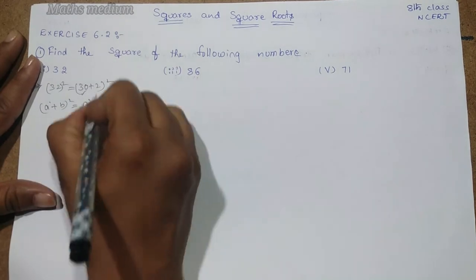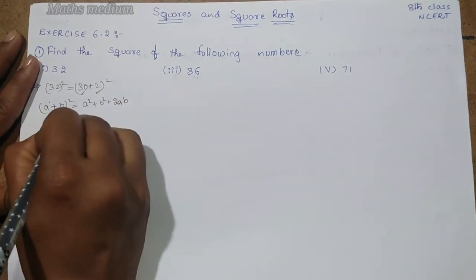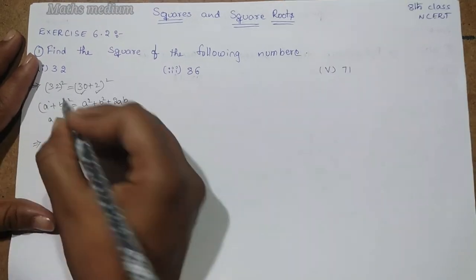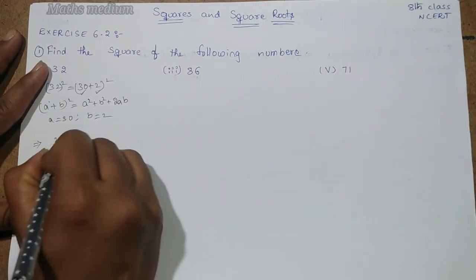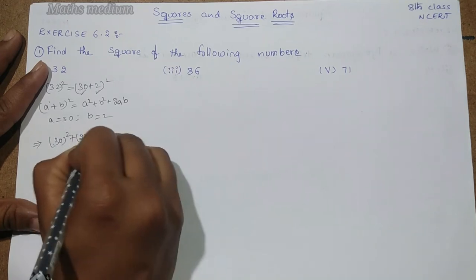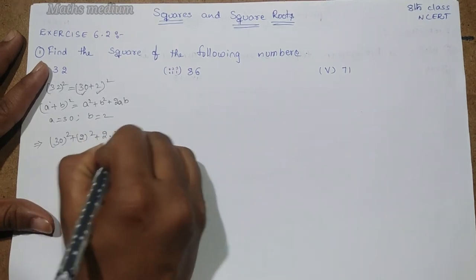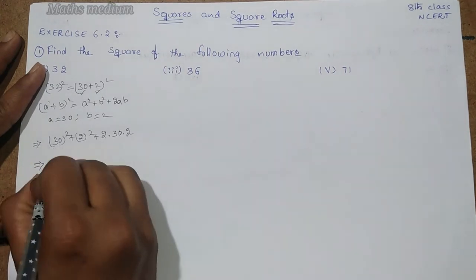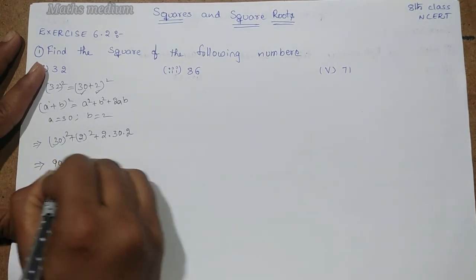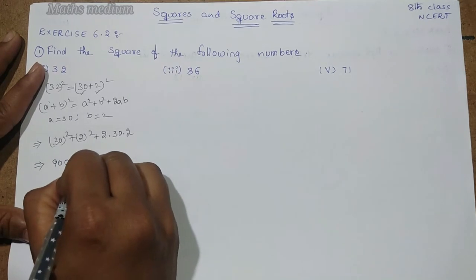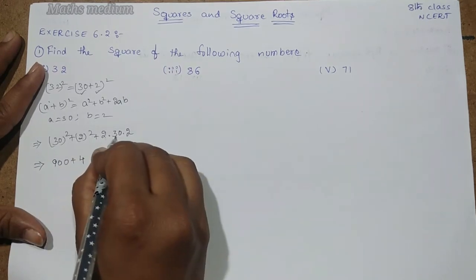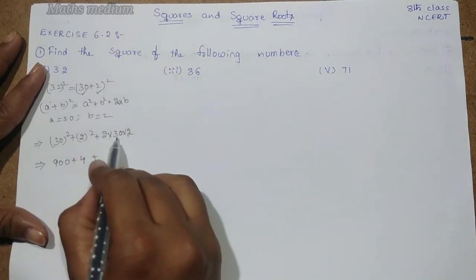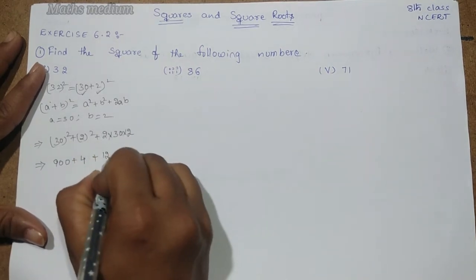Here a is 30 and b is 2. Now, substitute each value: 30 square plus 2 square plus 2 into 30 into 2. 30 square means 900 plus 2 twos are 4 plus 2 thirties is 60, times 2 is 120.